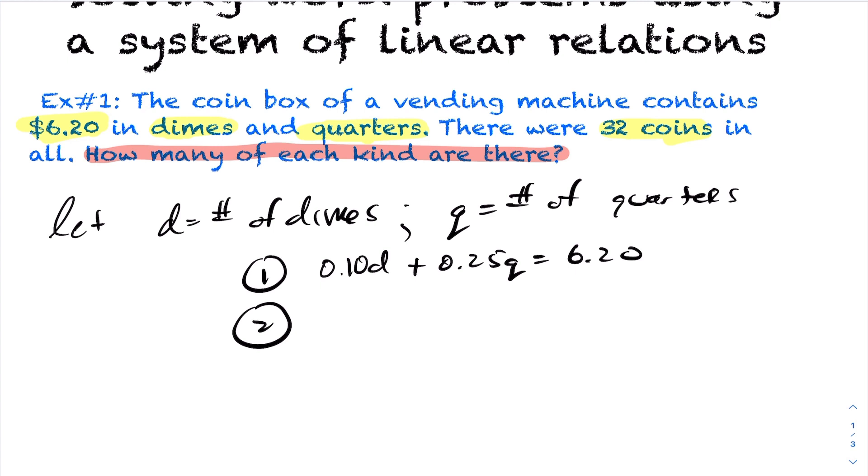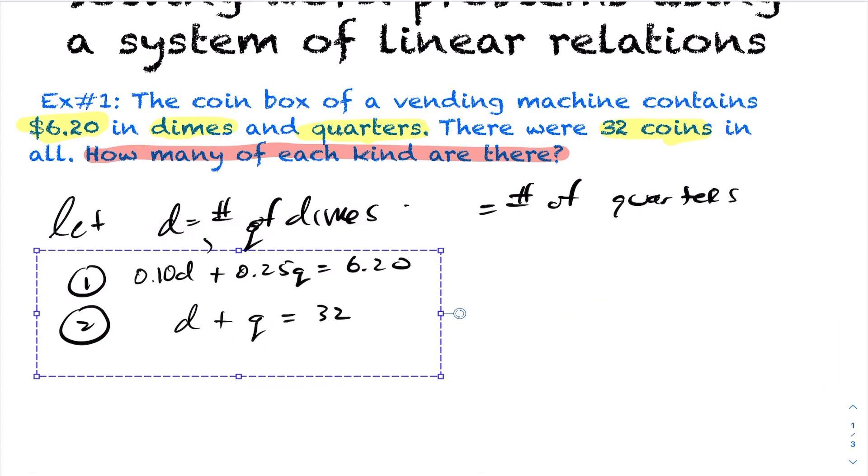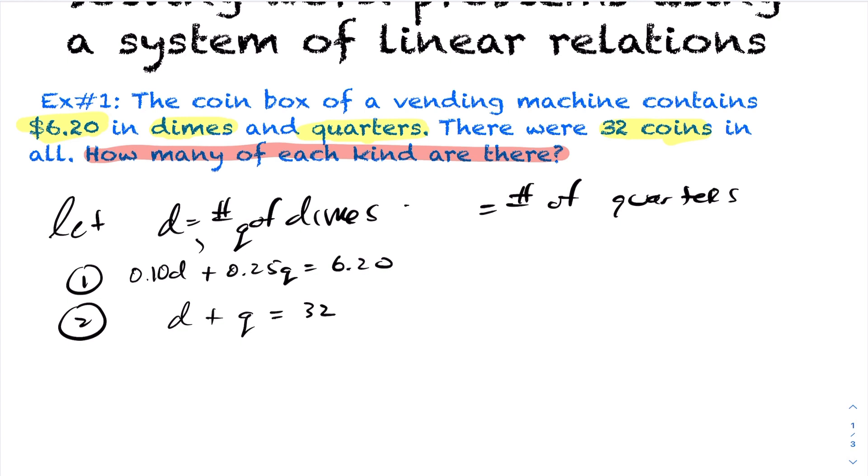For the second equation, it says there were 32 coins in all. So if I take the number of dimes plus the number of quarters, that sums to be 32. So now we have our system of linear equations created. I have two equations and two unknowns. Now in this situation, you can solve it however you want. I'm going to do substitution for this.